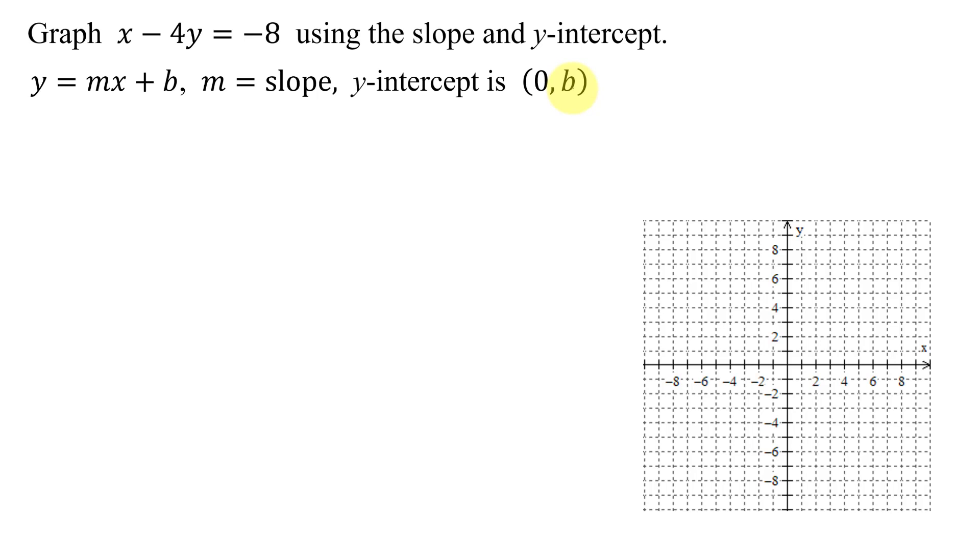So the first thing I'm going to have to do is rewrite my equation in slope-intercept form. Here's the equation of the line. I need to solve it for y. The first thing I'm going to do is subtract x from both sides. x minus x is 0,